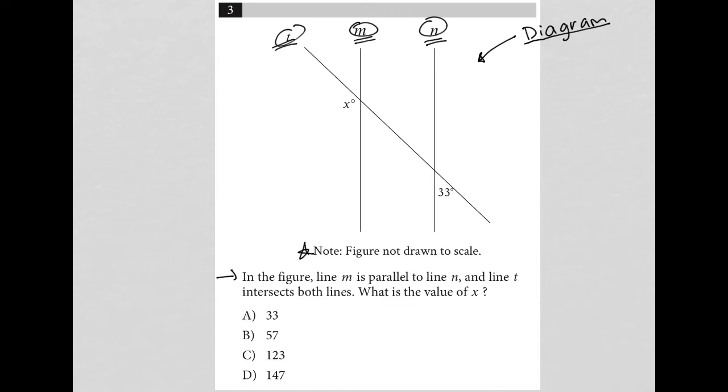So what do I know? I know that this is 33 degrees. I'll use a different color. So this is 33, which means that this is also 33. Which would mean that this is also 33, right? So these two angles here are considered to be alternate interior angles.